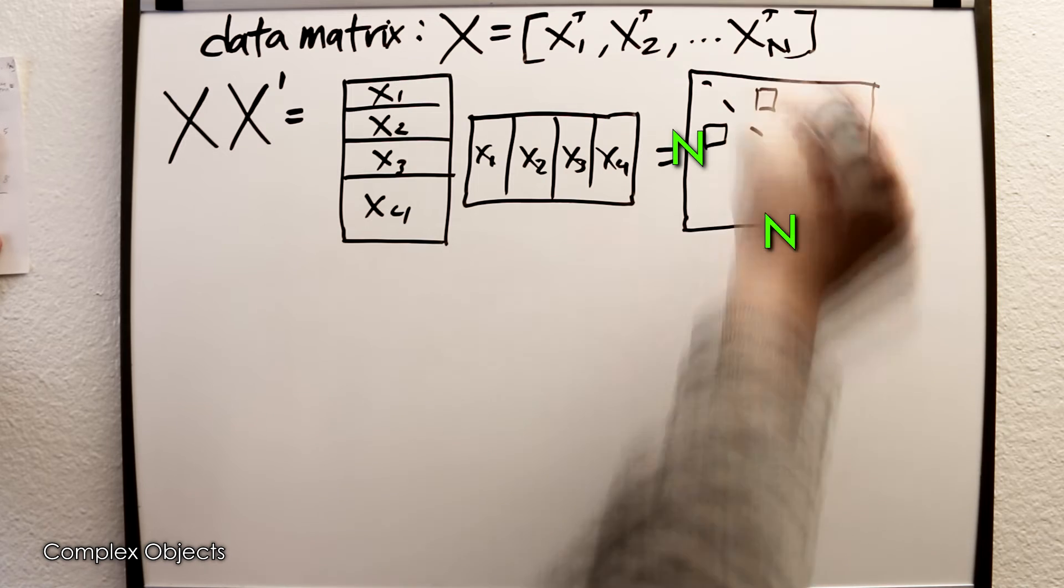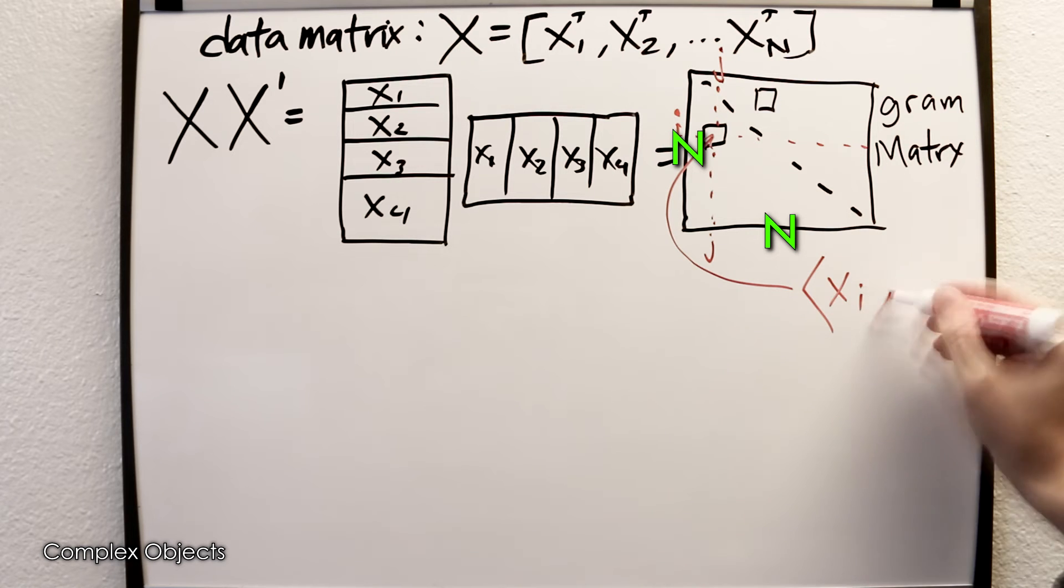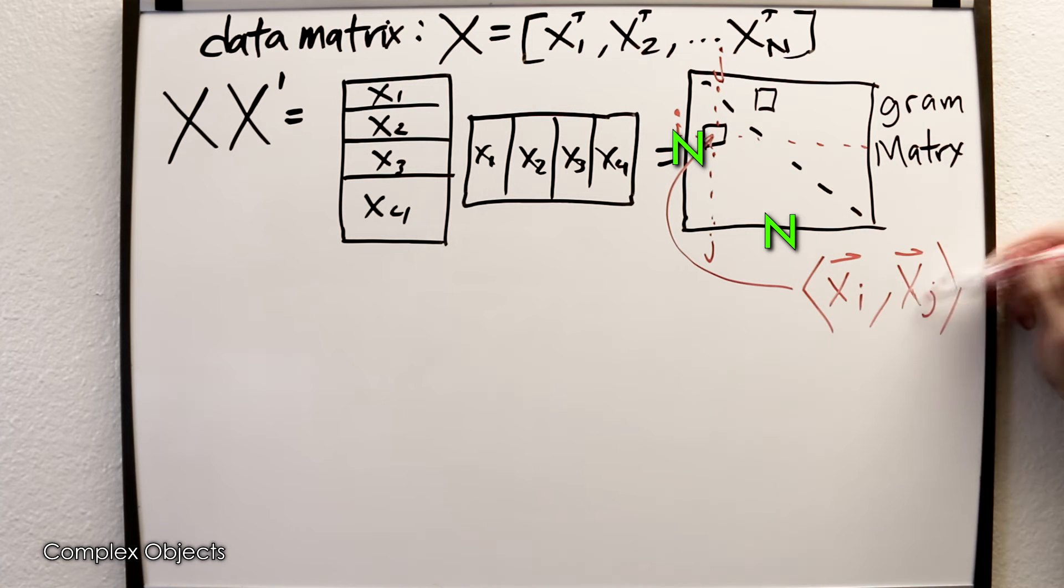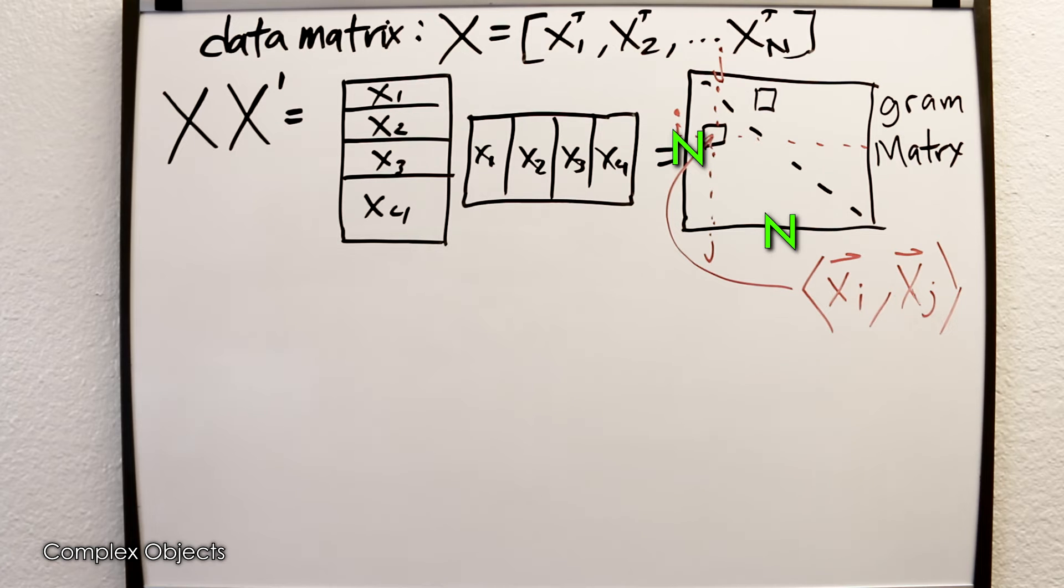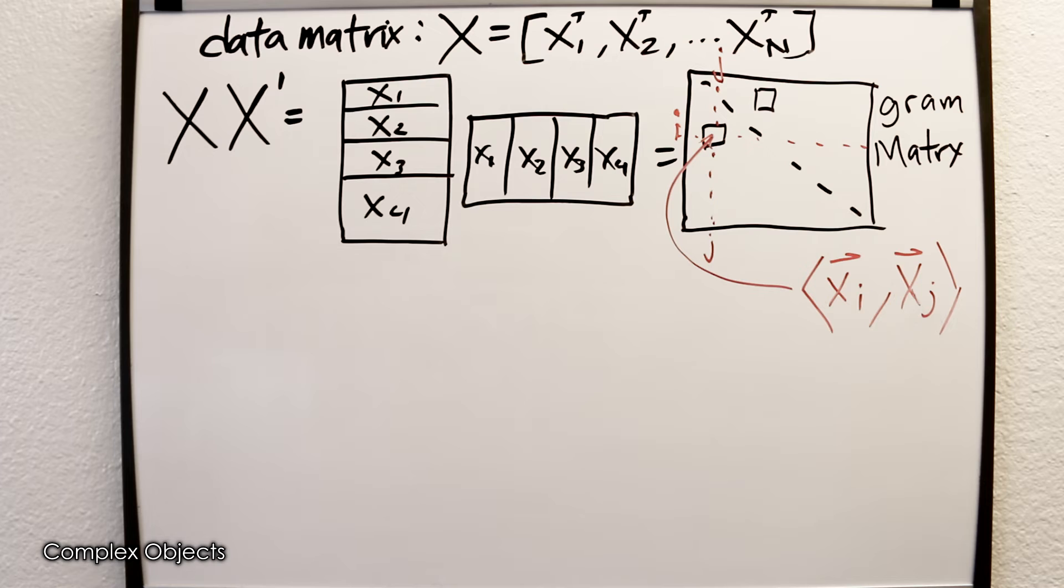I like to call it the inner product matrix because the value at index i,j is actually the dot product of vectors i and j. This gram matrix or inner product matrix is analogous to or similar to the similarity matrix. I'm going to explain why that is at the end of the video, but for now they say similar things about the structure of the data.